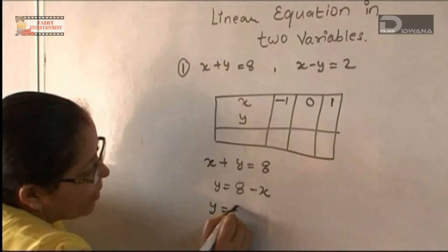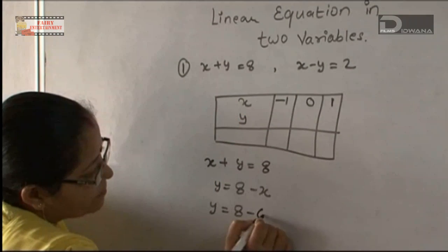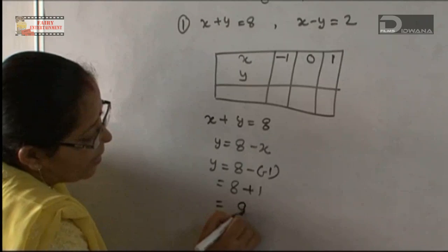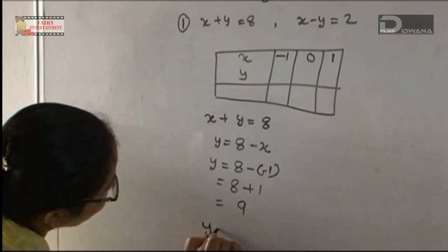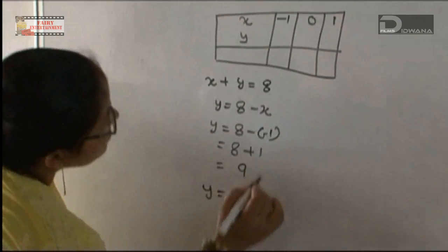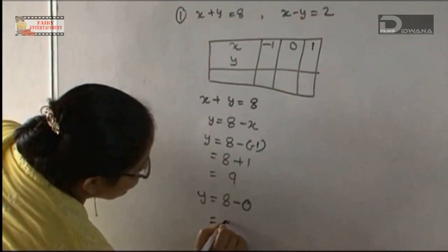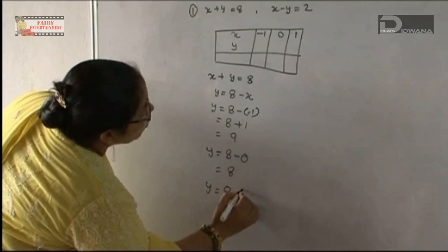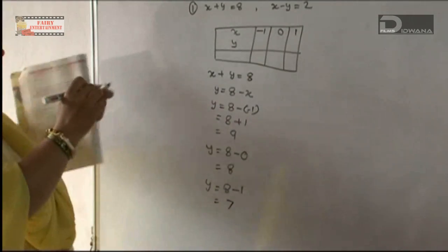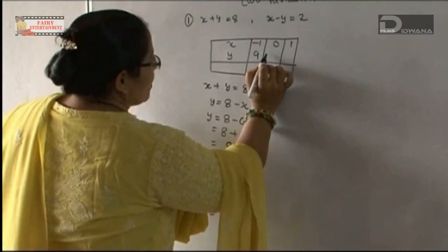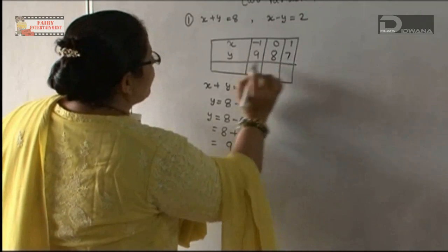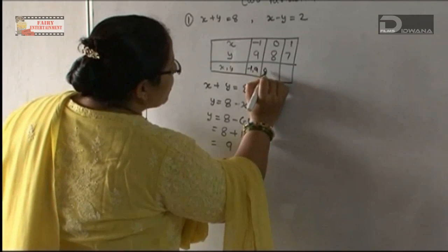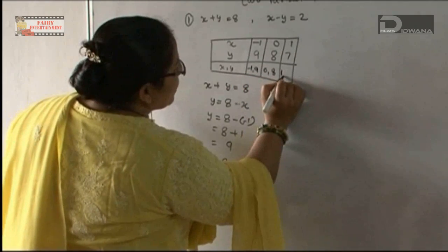When x equals minus 1, y equals 8 plus 1, which is 9. When x equals 0, y equals 8 minus 0, which is 8. When x equals 1, y equals 8 minus 1, which is 7. So the coordinate pairs for Equation 1 are: (minus 1, 9), (0, 8), and (1, 7).